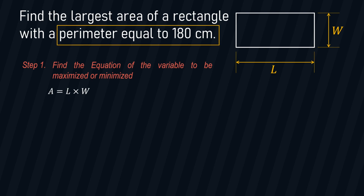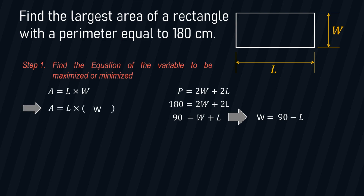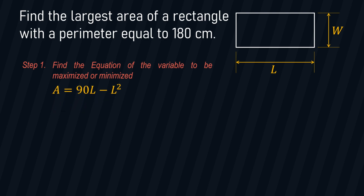For this problem, the given is the perimeter, equal to 180 centimeters. Perimeter is defined as the sum of all sides of a polygon, and for a rectangle, P = 2L + 2W. Substituting the given value of P and dividing both sides by 2, we get L + W = 90, so W = 90 − L. Substituting this into our area equation, we have A = L(90 − L), which simplifies to A = 90L − L². This is the equation we are looking for in step number one — an equation with only one independent variable.